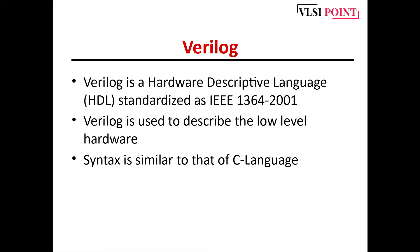Verilog is a hardware description language and the current standard is IEEE 2001. It is basically used to describe low-level hardware. Verilog is a very flexible language. It has predefined basic gates and digital circuits already saved in its digital library, which we can directly use — these are known as primitives. Verilog syntax is very similar to C language, but there are some differences.